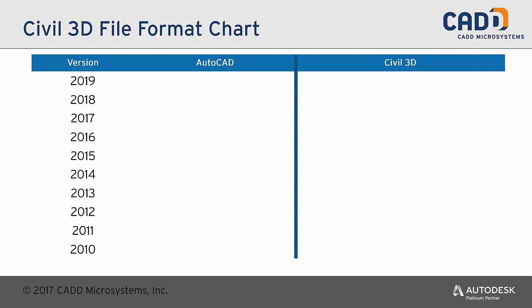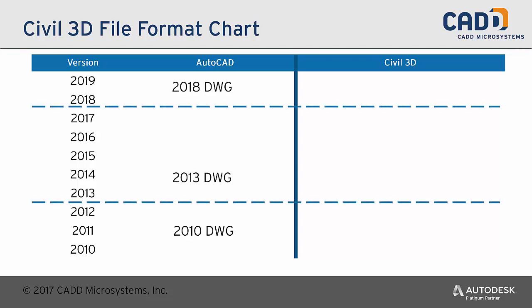Most people are familiar with the AutoCAD DWG versions and their compatibility with each other. Here's a little illustration: the version column is on the left, and you can see the DWGs listed. The 2010 DWG is used in 2010, 2011, and 2012. The 2013 DWG is used in 2013 all the way up to 2017. Then they released the 2018 DWG, which is used by 2018 and 2019. The great thing about these DWG versions is that at any time you can use the Save As command and save backwards. This is true of AutoCAD.